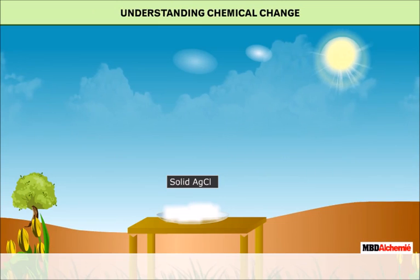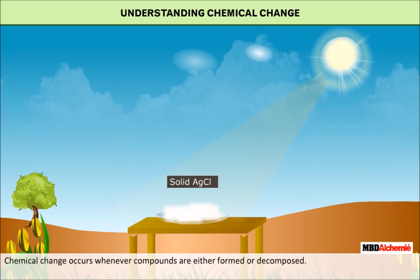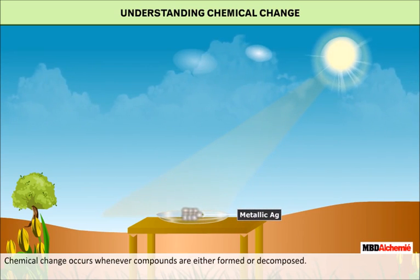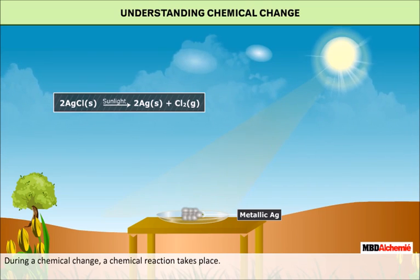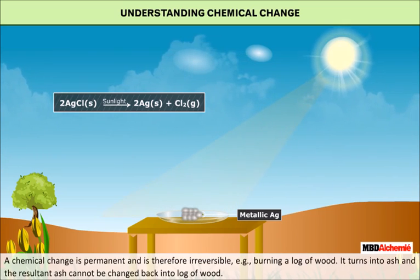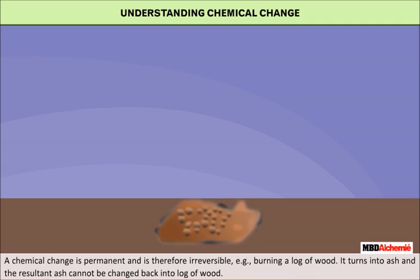A chemical change is a process in which substances are changed. Chemical change occurs whenever compounds are either formed or decomposed. During a chemical change, a chemical reaction takes place. A chemical change is permanent and therefore irreversible. For example, burning a log of wood turns it into ash, and the resultant ash cannot be changed back into a log of wood.